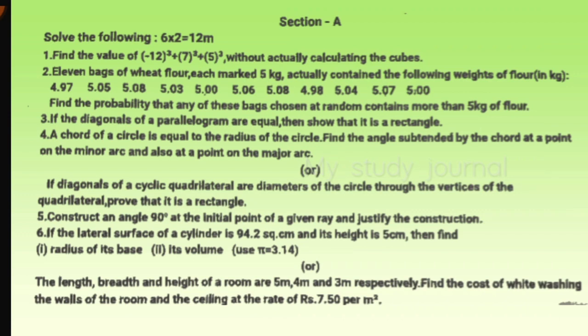Fifth question is to construct an angle of 90 degrees at the initial point of a given ray and justify the construction. We have to construct 90 degrees and also justify it.